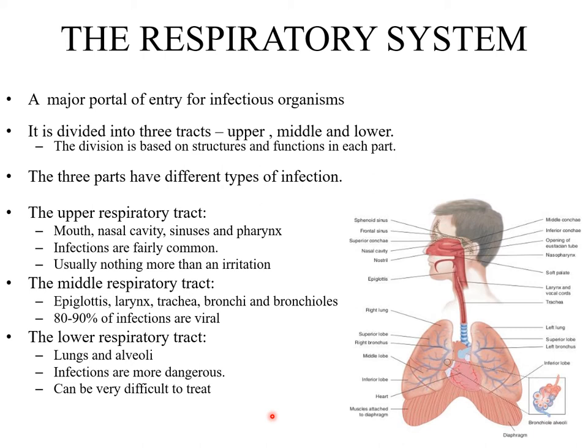The upper respiratory tract includes the mouth, nasal cavity, sinuses, and pharynx. Infections are fairly common here and usually nothing more than an irritation. The middle respiratory tract includes the epiglottis, larynx, trachea, bronchi, and bronchioles. Most infections in the middle respiratory tract are caused by viruses. The lower respiratory tract includes the lungs and alveoli, and infection here is called pneumonia. These infections are more dangerous since the lower respiratory tract is a sterile environment.